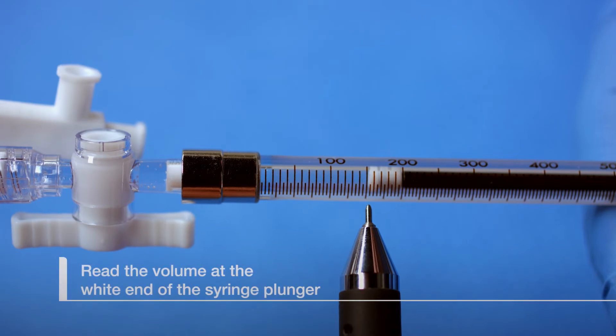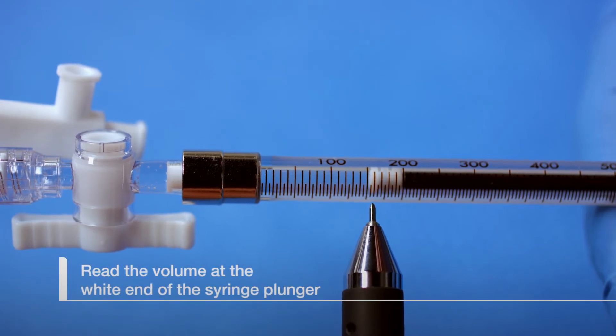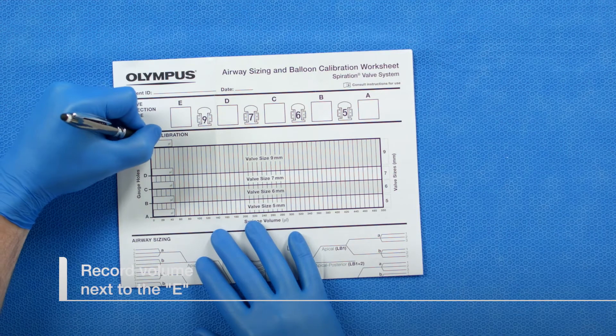Read the volume at the white end of the syringe plunger and record the volume next to the E on the balloon calibration section of the worksheet.